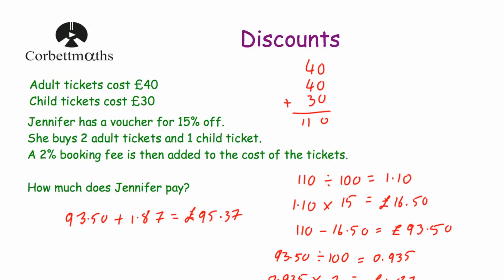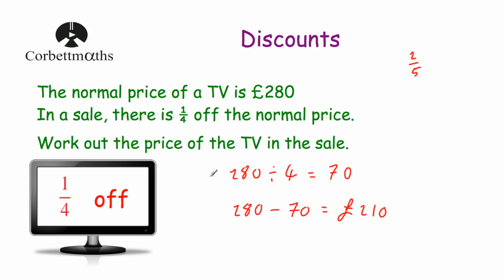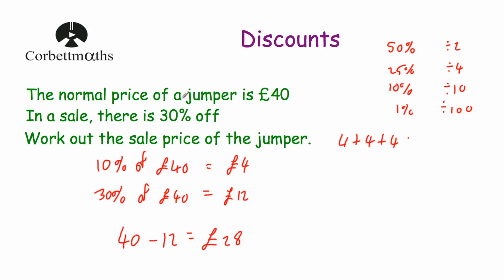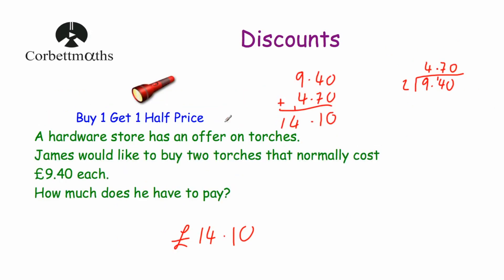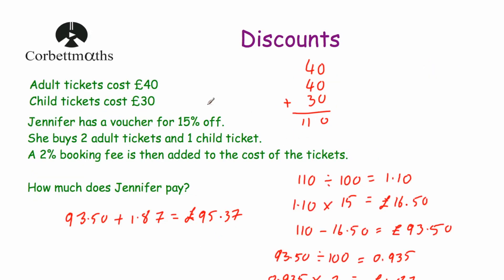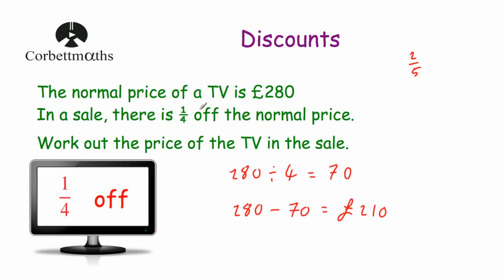Those have been the Corpromise questions going through discounts. We've looked at working out a fraction off the normal price, a percentage off the normal price, a buy-one-get-one-half-price scenario, and a question where booking fees are added on. I hope you found this video useful. There are practice questions on Corpromise as well, so feel free to try those. If you found the video useful, please like it and subscribe to the YouTube channel.